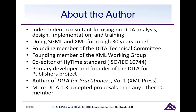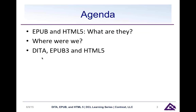I will talk a little bit about EPUB 3, HTML5, and DITA and where things are at the moment. We want to really come up to speed on EPUB and HTML5 — what are they, where did they come in the last year or so, and where did we come from, and then how are DITA, EPUB 3, and HTML5 related? How can you get to these new delivery technologies from your DITA content?